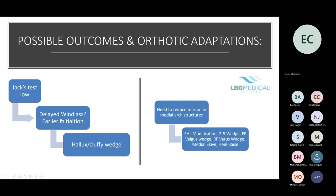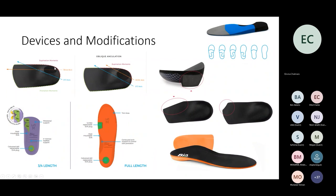If you get a low score it may indicate a delayed windlass. You can consider a hallux or Cluffy wedge and modifications to reduce tension in the medial arch structures: functional hallux limitus modification, a two-to-five wedge, forefoot valgus wedging, rearfoot varus wedging, medial heel skive, and heel raise. You can use Kirby skives and MOSI posts to generate a supination force, or remove the first MET plug on your BioAdvanced orthotics, which helps plantar flex the first ray and increase sagittal plane motion.